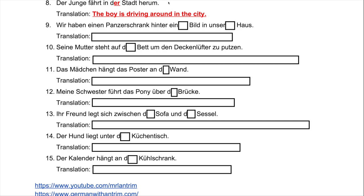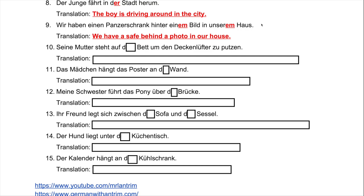Number nine: 'Wir haben einen Panzerschrank hinter ___ Bild in ___ Haus.' Two blanks to fill. The verb is 'haben,' which cannot move things from one place to another — you have something where it is. So this is dative. 'Bild' is neuter, so 'einem Bild.' 'Haus' is also neuter, so 'in unserem Haus.' A Panzerschrank is a safe, as in something to lock up valuables. Answer: 'Wir haben einen Panzerschrank hinter einem Bild in unserem Haus' — we have a safe behind a photo in our house.